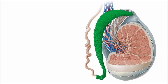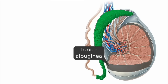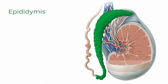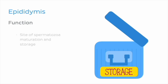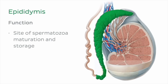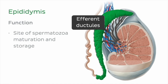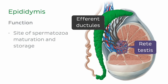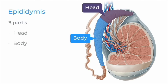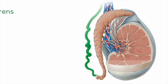Attached to the posterior surface of each testis, outside the tunica albuginea and contained within the tunica vaginalis, is the epididymis. This firm and highly coiled tube consists of a series of ducts and is the site of spermatozoa maturation and storage. Straight efferent ductules extend from the rete testes to transport sperm to the epididymis. The epididymis is divided into three parts: the head, the body, and the tail, which is continuous with the ductus deferens.